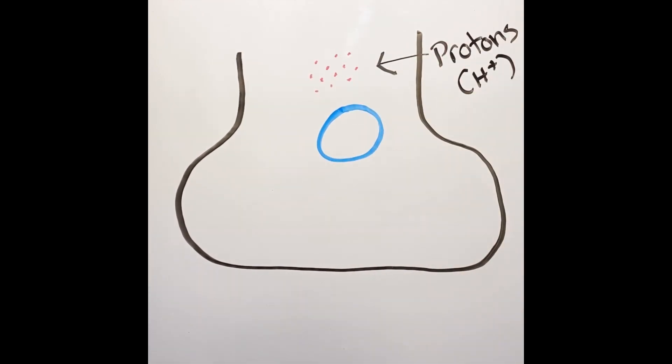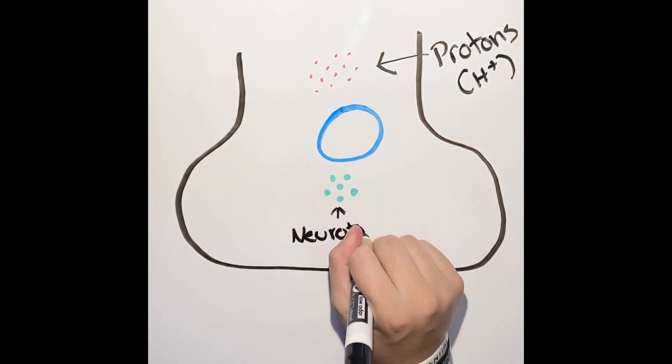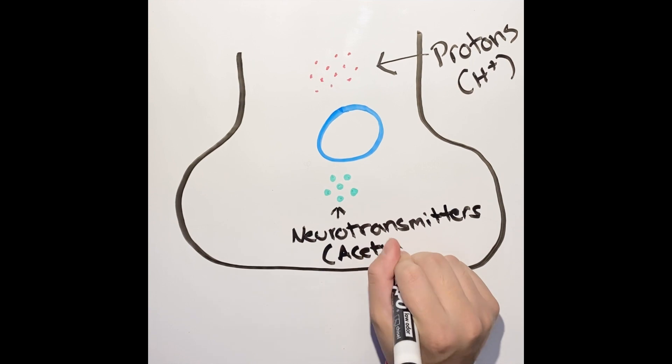Here we have an empty vesicle in the presynaptic cell, and surrounding it we have protons and neurotransmitters. For this video, the neurotransmitter will be acetylcholine.